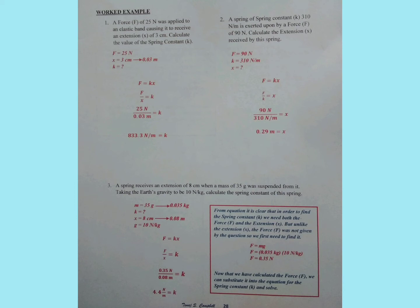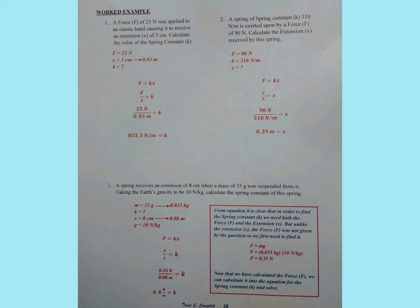But we do not have the force. Looking back at our listed values, we see that we have also been given the mass and the gravitational pull of the earth. So we need to use these two values to find the force. Force is equal to mass times gravity, which becomes 0.035 kilograms times 10 Newtons per kilogram, which gives us a value of 0.35 Newtons. After we have calculated our force, we are going to substitute it back into the equation for K, where K equals 0.35 Newtons divided by 0.08 meters, which ultimately works out to be 4.4 Newtons per meter.